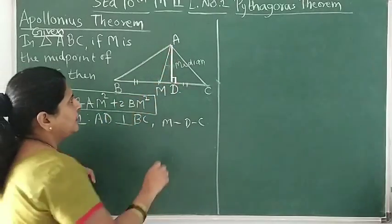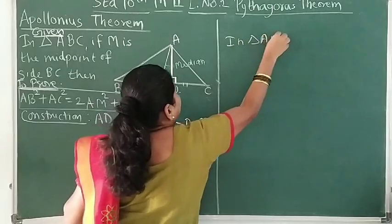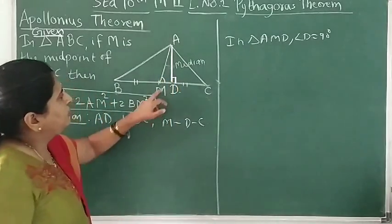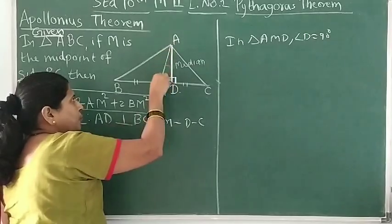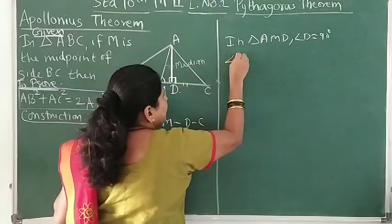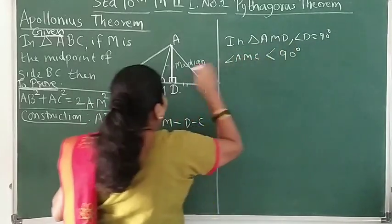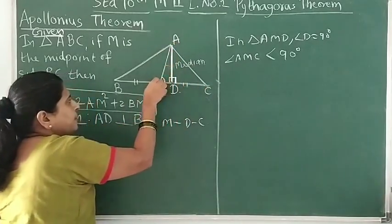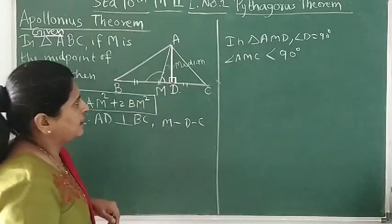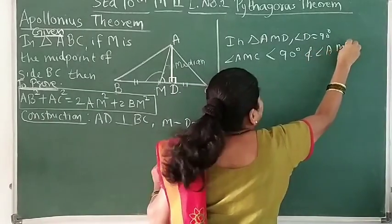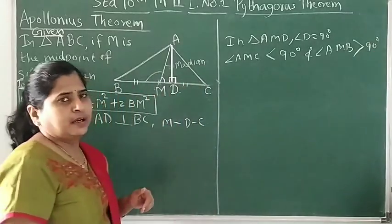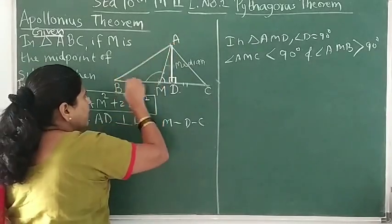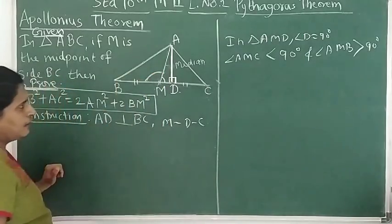What will happen if we have this perpendicular? We will get a right angle triangle. In triangle AMD, angle D is 90 degrees. So angle AMD will be an acute angle, and angle AMC will also be acute — these are both going to be acute angles. Angle AMC is less than 90 degrees. And since AMC is acute, angle AMB is going to be an obtuse angle — bigger than 90 degrees — because angle AMC and angle AMD form a linear pair.